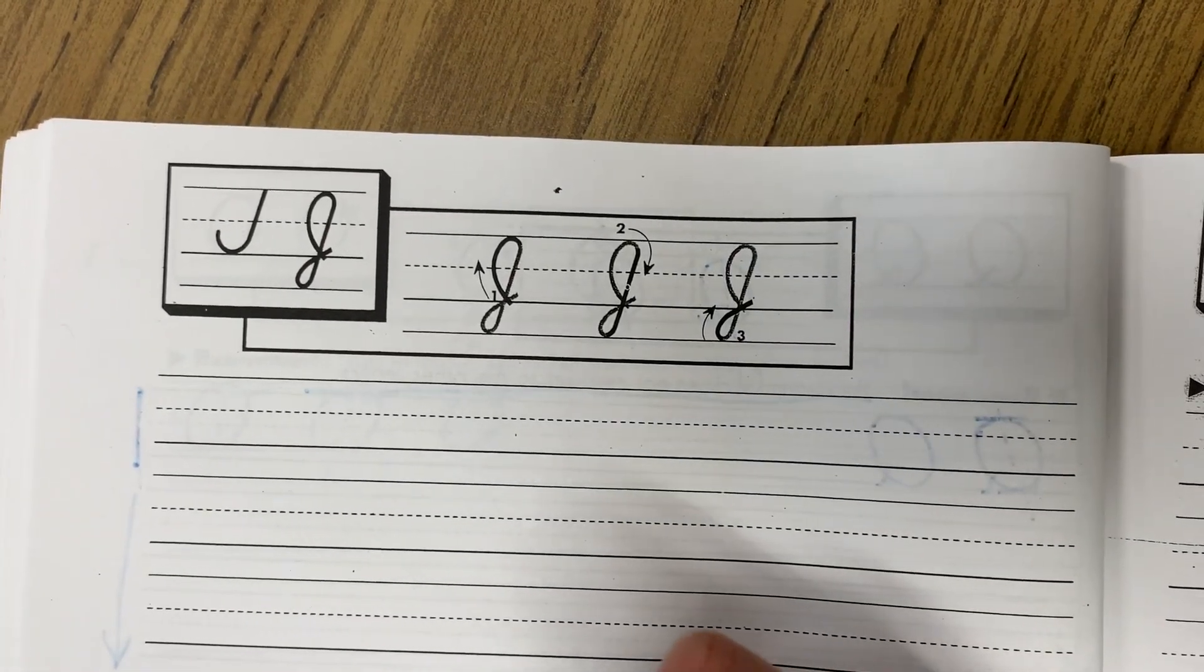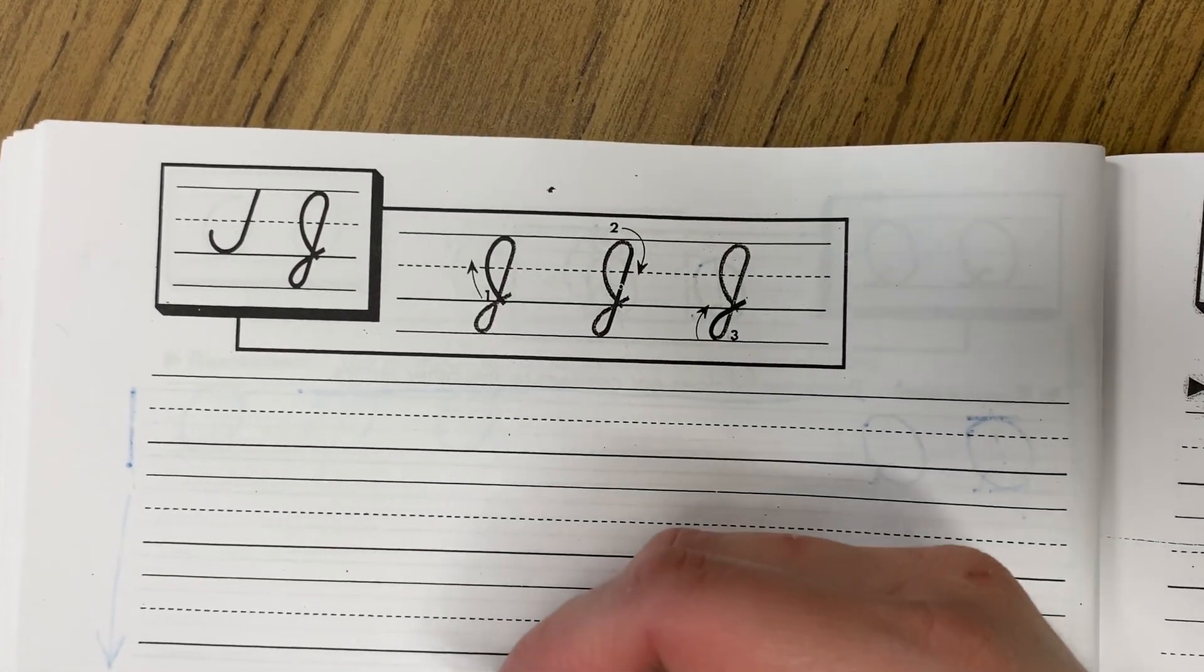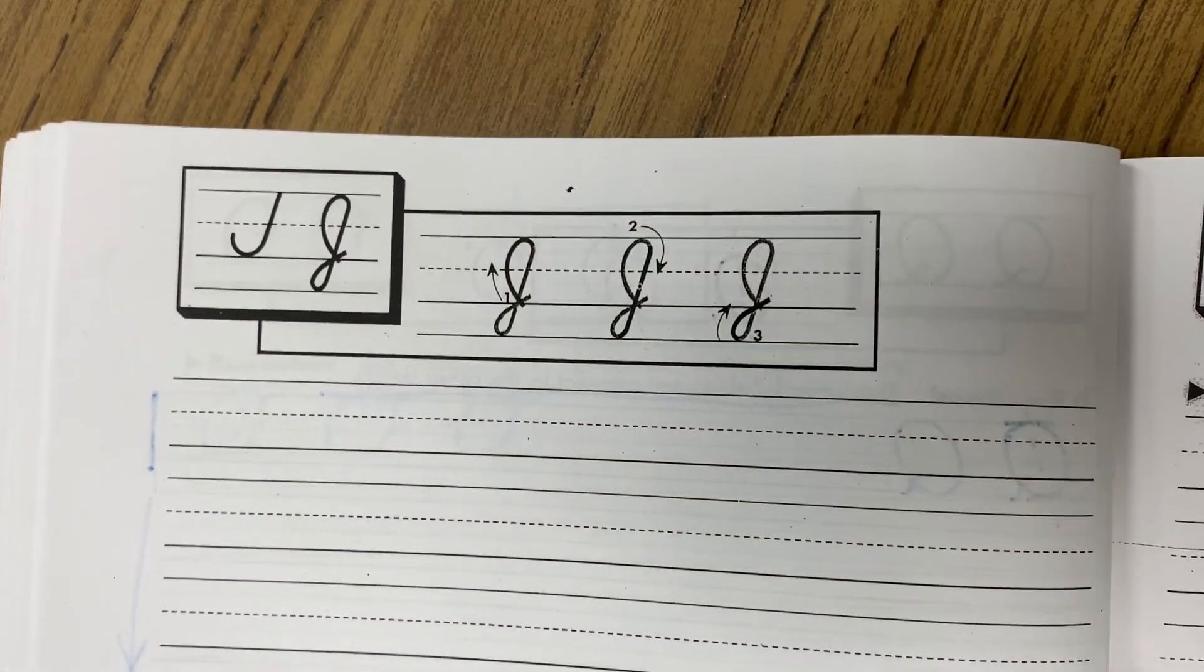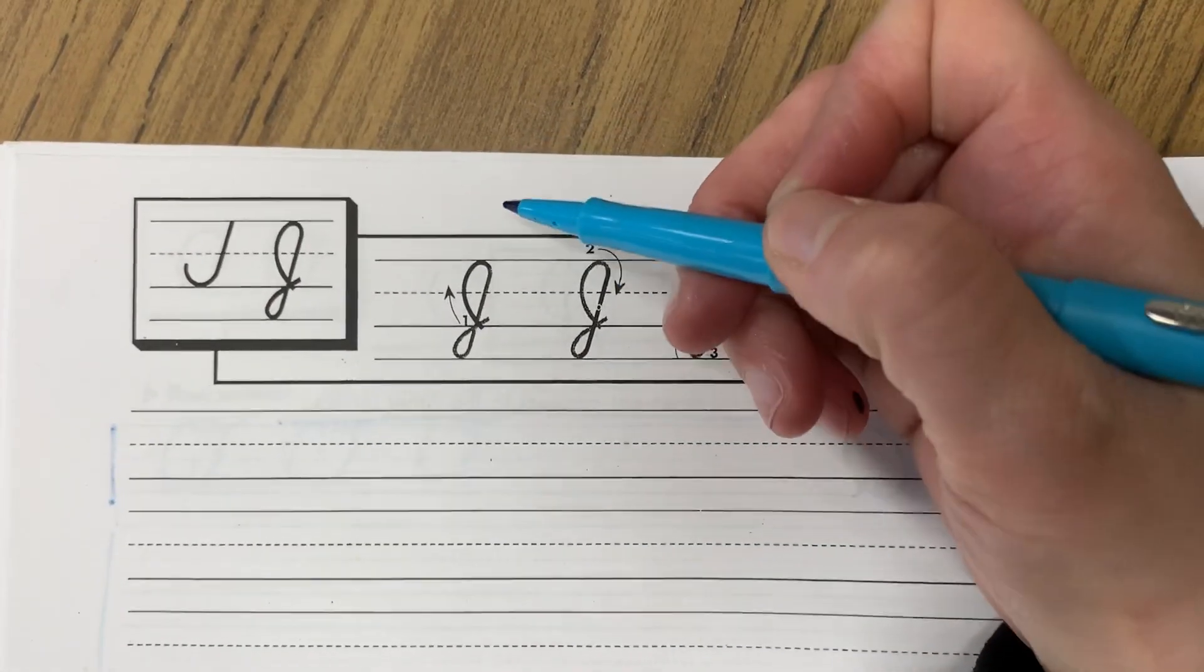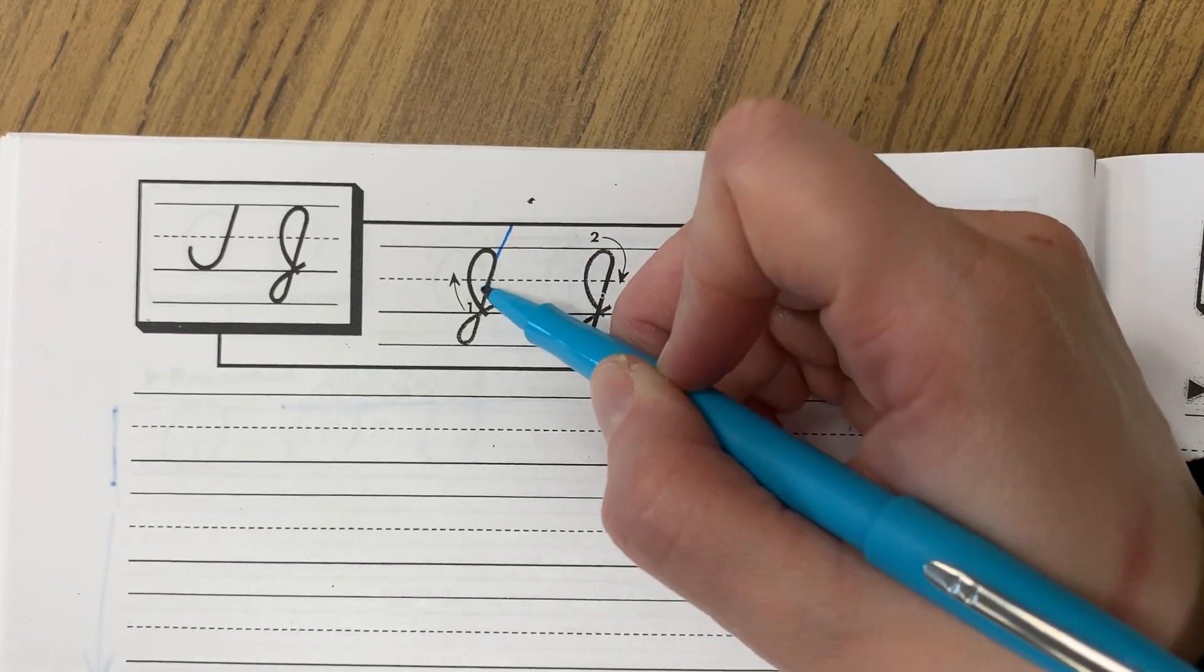All right, let's learn how to make the cursive letter capital J today. So in your book, just keeping in mind again today that we are working at that diagonal.